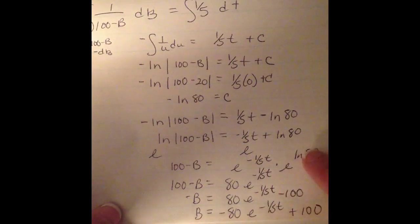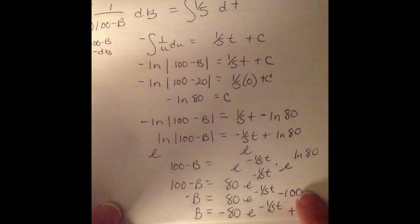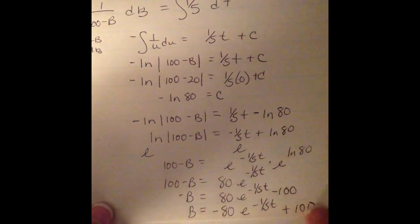Well, e and ln cancel out. So the 80 goes in front. Then I'm going to subtract the 100 over and divide by negative. So this would be your particular solution.